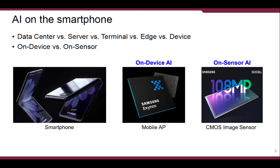First of all, I'd like to make the terminology clear. In this talk, on-device AI means that a neural net runs on a mobile AP, and on-sensor AI means it runs on the CMOS image sensor. So, how do you make a neural net run on an image sensor? That's what I'm going to talk about.